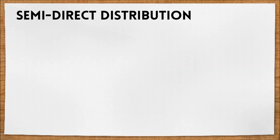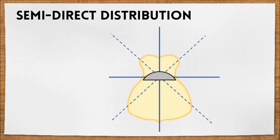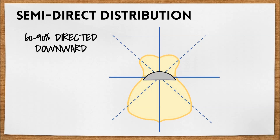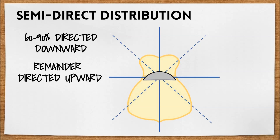Semi-direct is shown like this. We can see that 60 to 90% of the light is directed downward, with the remainder of the light directed upward.